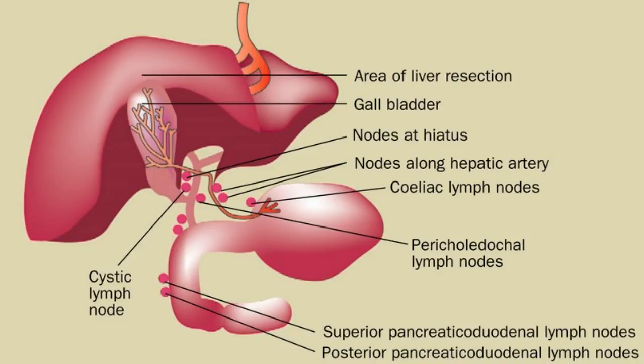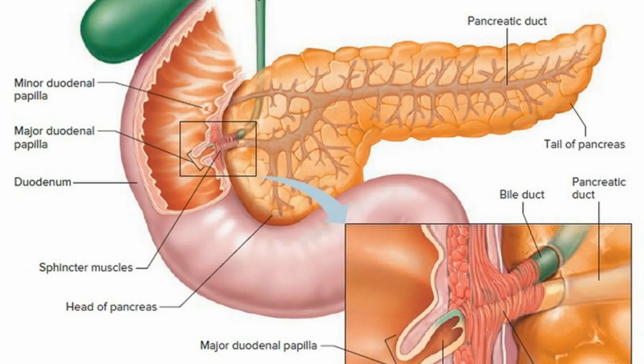When the bile stored in the gallbladder is abnormally concentrated, some of its constituents can precipitate, forming stones inside the gallbladder. In medicine, this condition is identified as cholelithiasis.